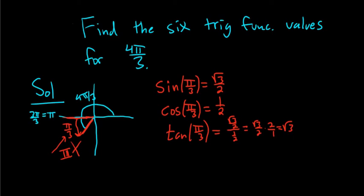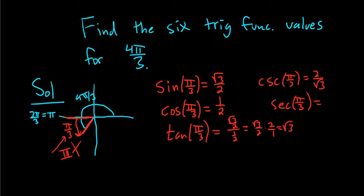The other three functions are easy because you just find the reciprocals. Cosecant is the reciprocal of sine, so that's 2 over √3. Secant is the reciprocal of cosine, so that's 2 over 1, which is 2. Cotangent is the reciprocal of tangent, so that's 1 over √3.